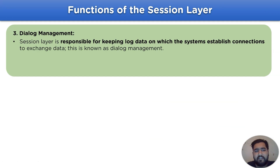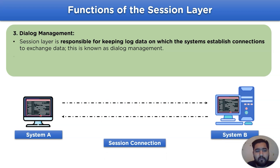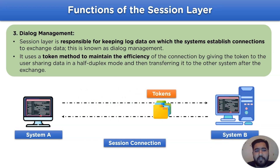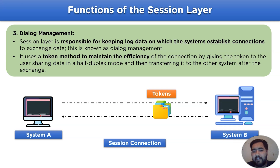The session layer is responsible for keeping log data on which systems establish connections to exchange data — this is known as dialogue management. It also uses a token method to maintain the efficiency of the connection by giving the token to the user sharing data in case of a half duplex mode, and then transferring it along with the data to the next system.